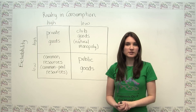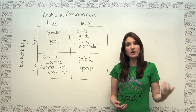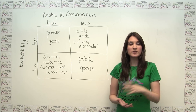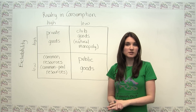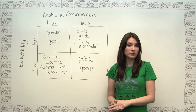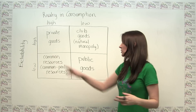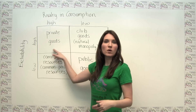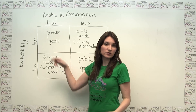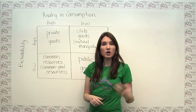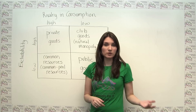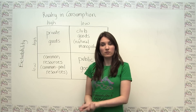Using the definitions of excludability and rivalry, we can categorize goods and services into four different buckets. Private goods, or our well-behaved goods from earlier, are both excludable and rival.